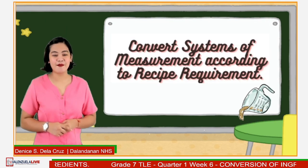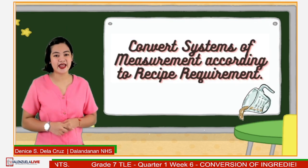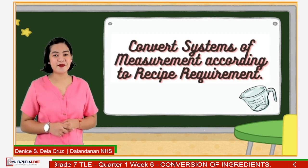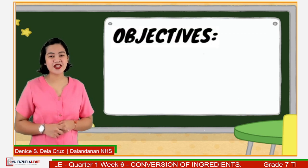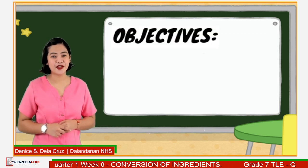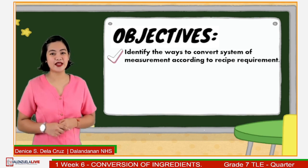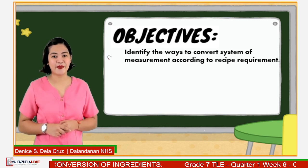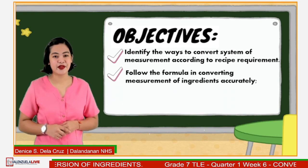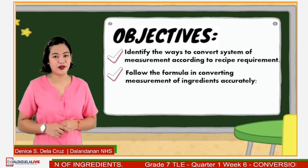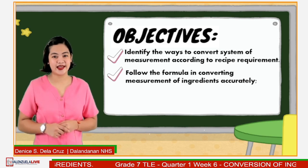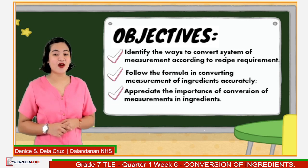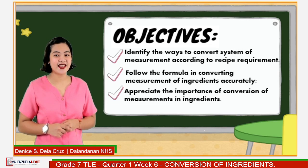Our learning competency and outcome for this day is to convert system of measurement according to recipe requirement. For today's objectives, let us first identify the ways to convert system of measurement according to recipe requirement. Second, follow the formula in converting measurement of ingredients accurately. Lastly, appreciate the importance of conversion of measurement in ingredients.